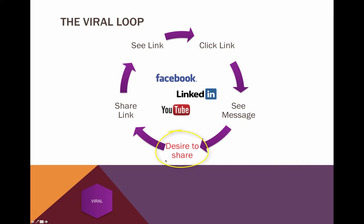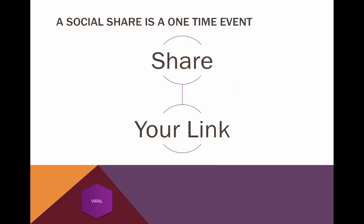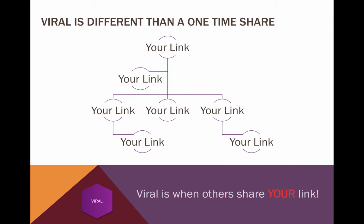I have the 'desire to share' highlighted in red because that's a really important part of the going viral process. One other thing to bring to your attention is the idea that a social share is a one-time event. A lot of times people say they're doing viral marketing because they posted their link out on Facebook — but that really is not viral marketing. Sharing your link on Facebook is an event where people can see that information for that one period of time only. They're not actually re-sharing your link. Viral is different than a one-time share. Viral is when your link is being shared by others — when you share your link with somebody who then re-shares it with their friends, who then re-share it.